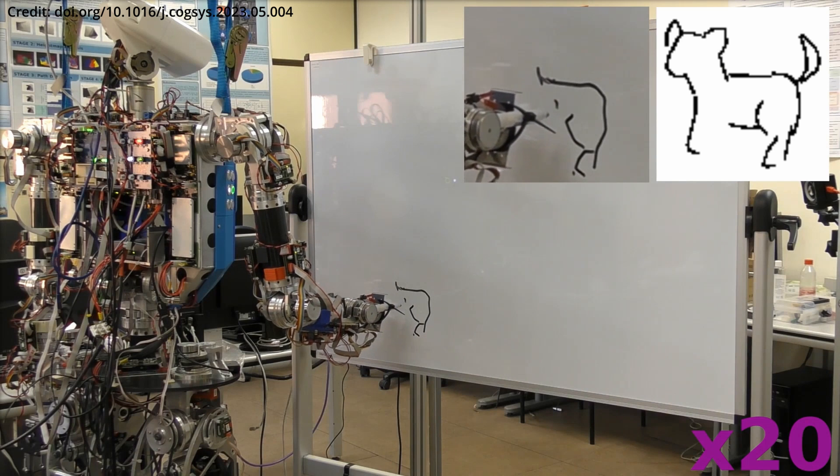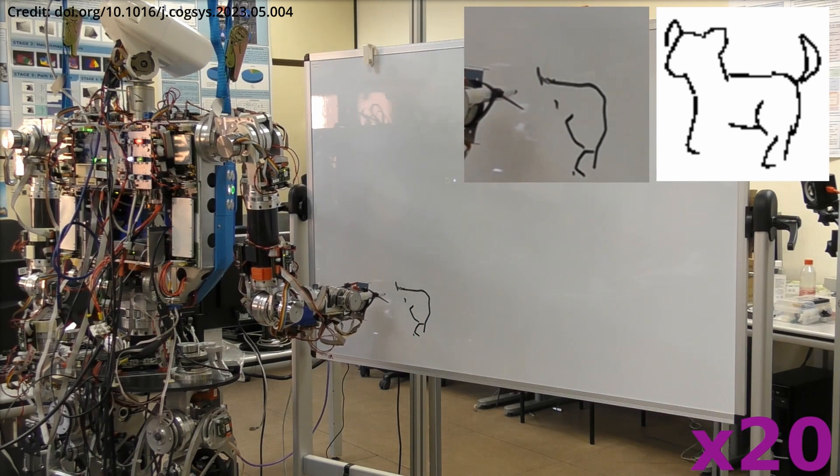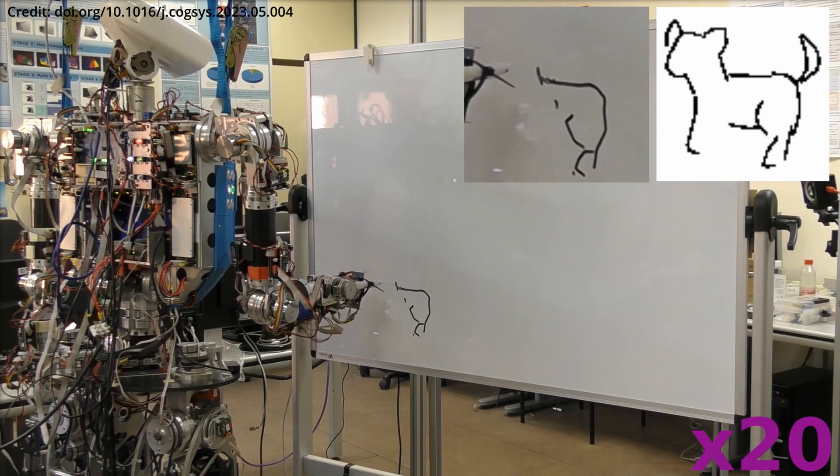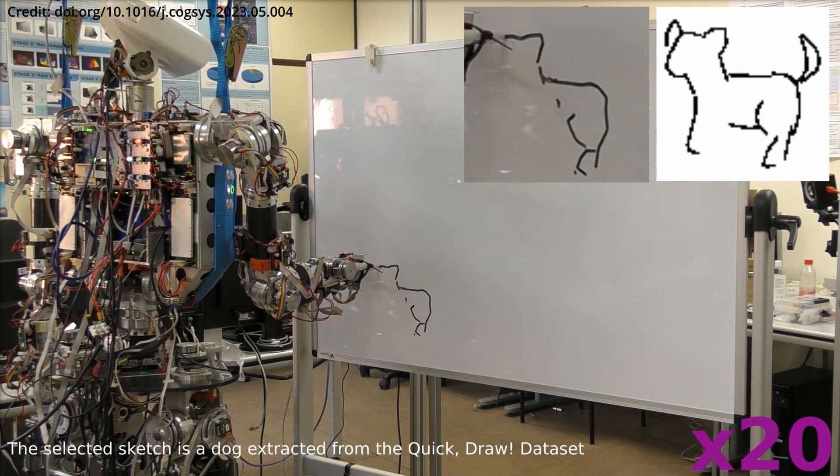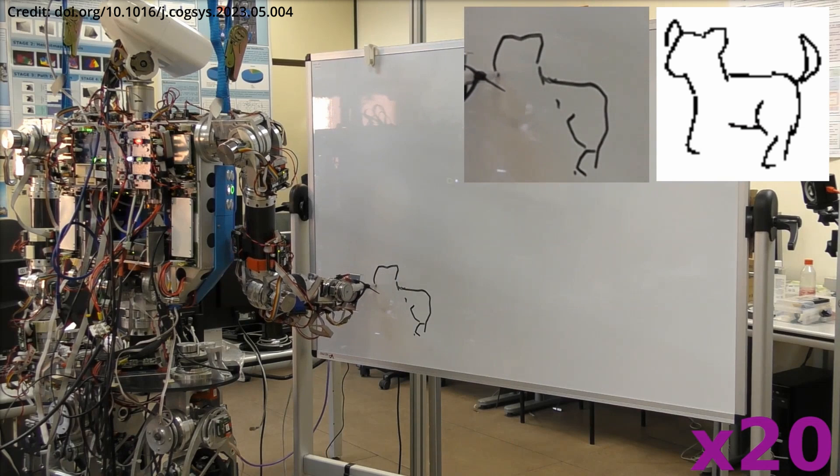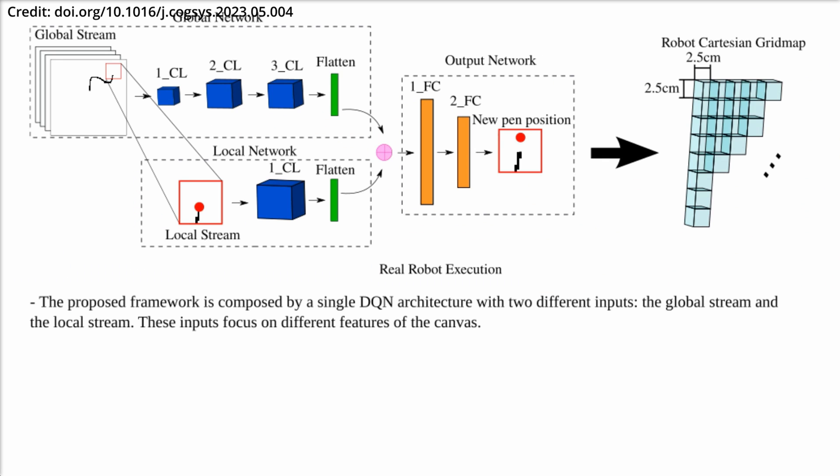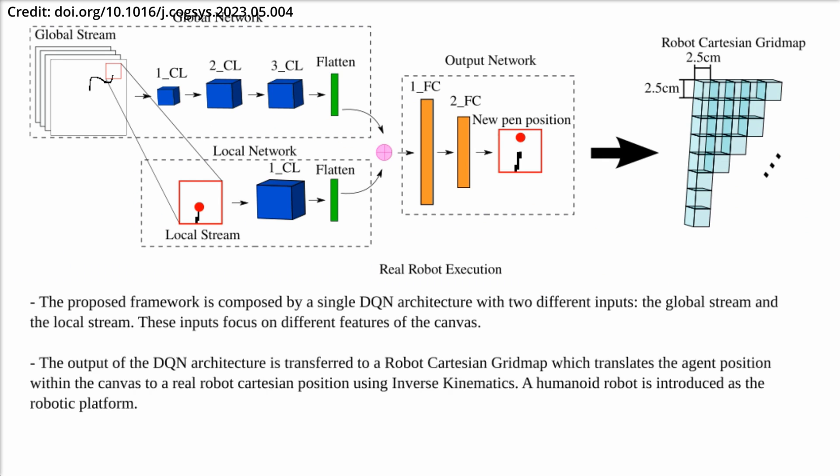The project differs from existing robotic art creators that operate more like printers, simply reproducing pre-designed images. Instead, this humanoid robot uses advanced learning techniques to decide how to draw, introducing a level of creativity and spontaneity in its artwork.